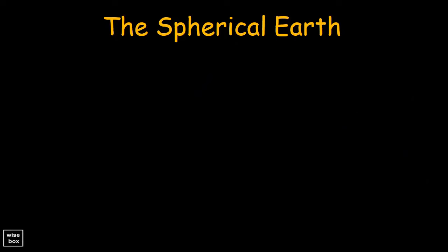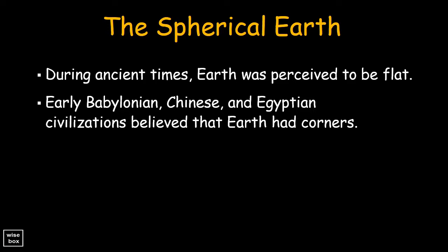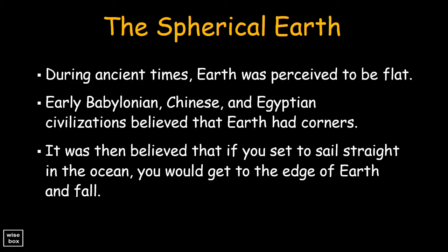During ancient times, the Earth was perceived to be flat. Early Babylonian, Chinese, and Egyptian civilizations believed that Earth had corners. It was then believed that if you set to sail straight in the ocean, you would get to the edge of Earth and fall.